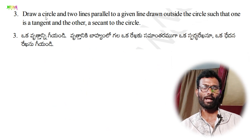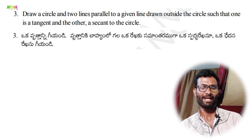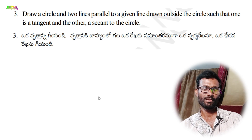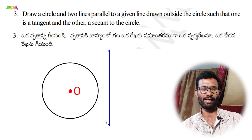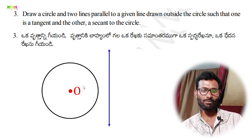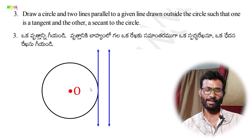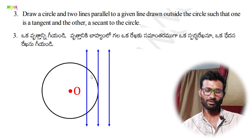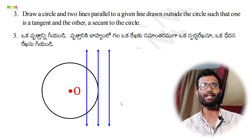Question number 3: draw a circle and two lines parallel to a given line drawn outside the circle, such that one is a tangent and the other is a secant to the circle. A tangent touches the circumference at one point and a secant intersects the circle at two points.